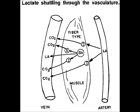This is one of Dr. Brooks' original illustrations of the lactate shuttle. According to Brooks, lactate is in constant production and circulation, shown by the lactate present in the artery and the vein.